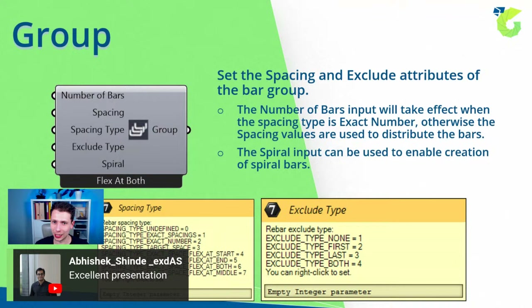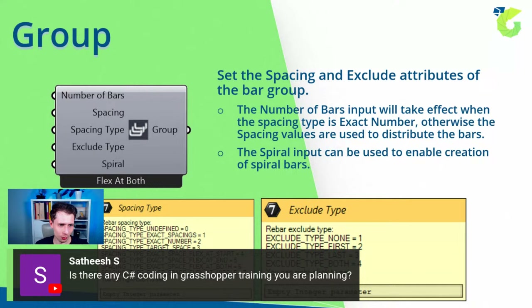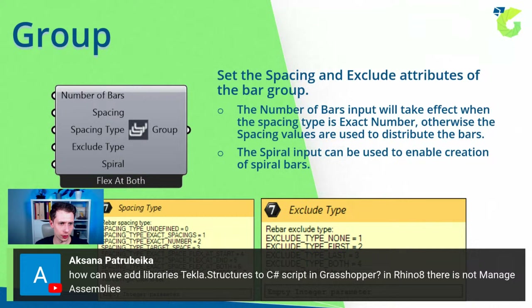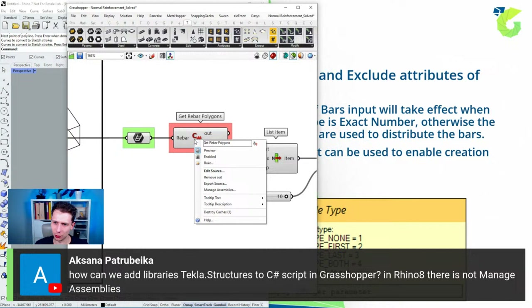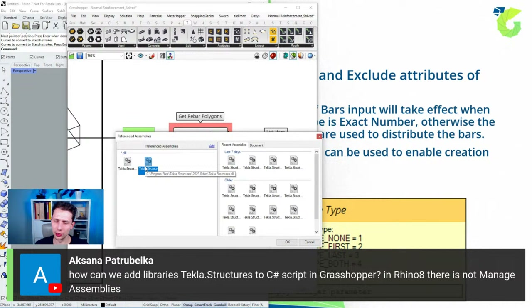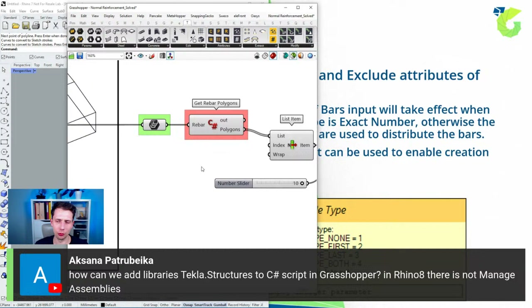Regarding adding Tekla Structures libraries to a C# component in Grasshopper in Rhino 8 — there's no Manage Assemblies. This may be something to be implemented in a future Rhino 8 update. Regarding creating reinforcement with the same workflow using Rhino Inside Revit: unfortunately there is a different API and different attributes, so it's not a one-to-one workflow, but the principle is supposed to be similar.